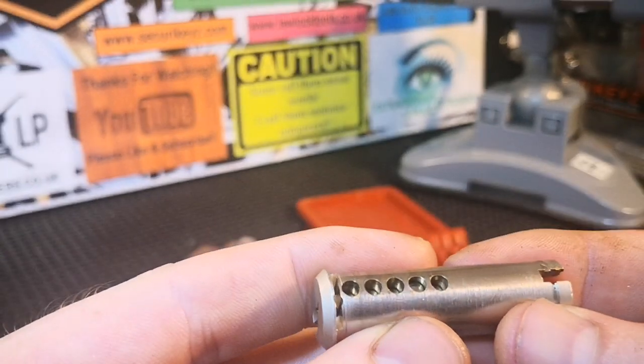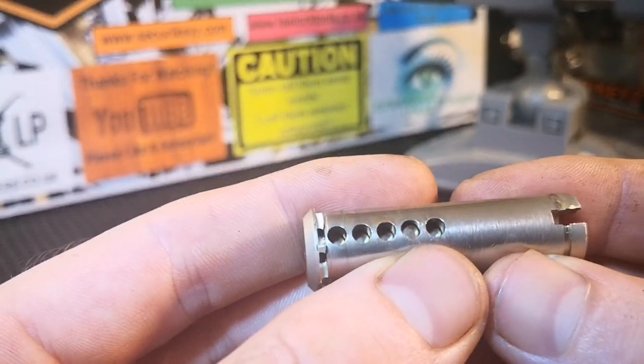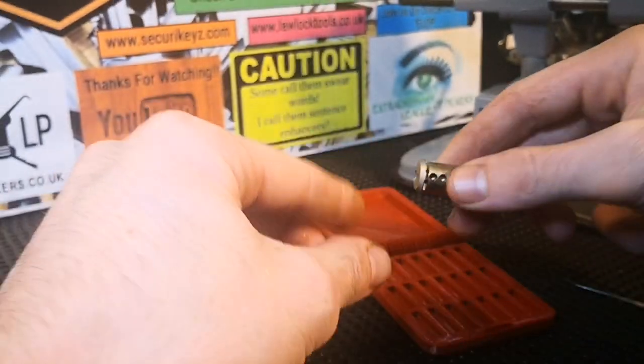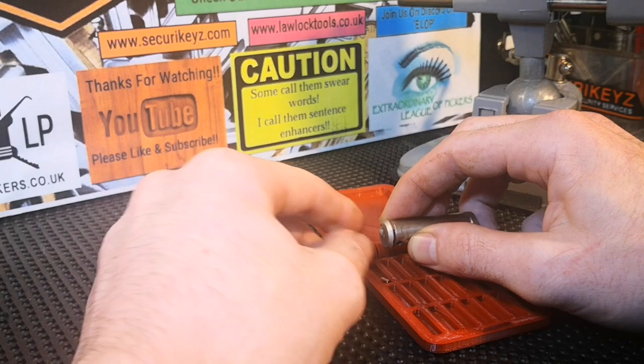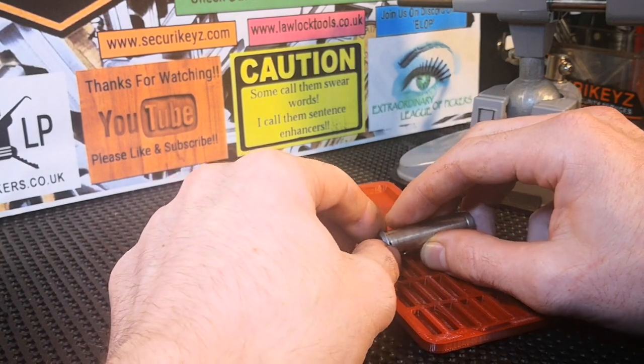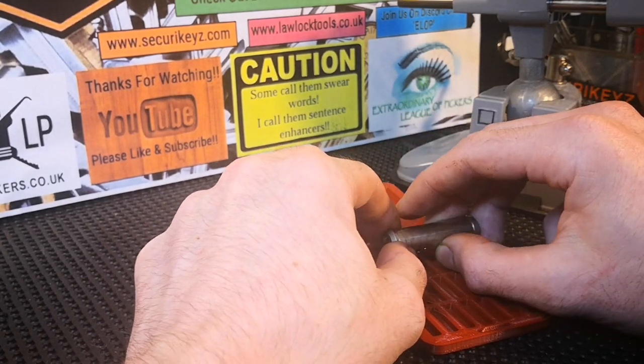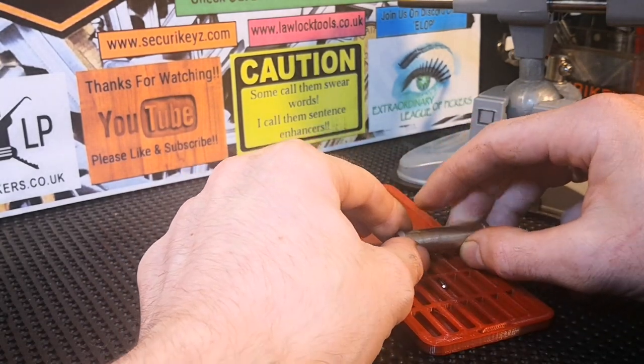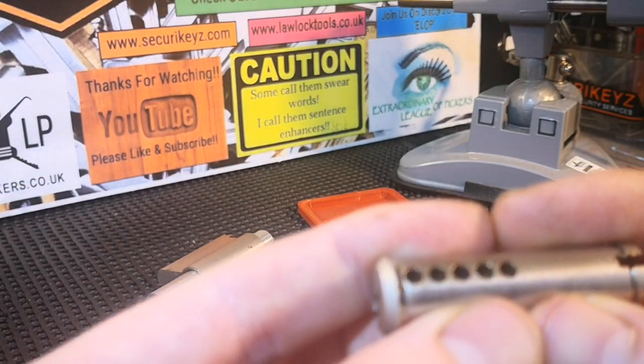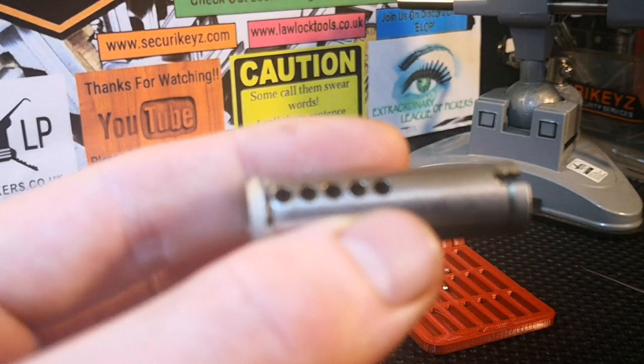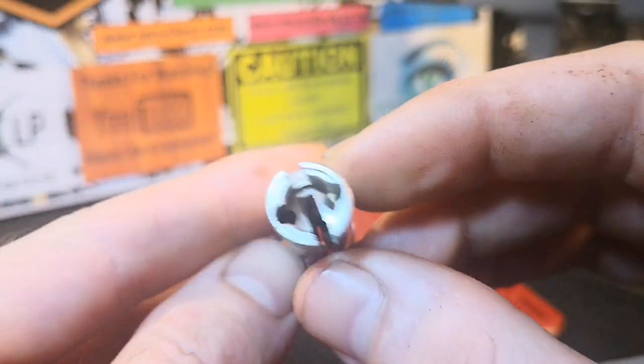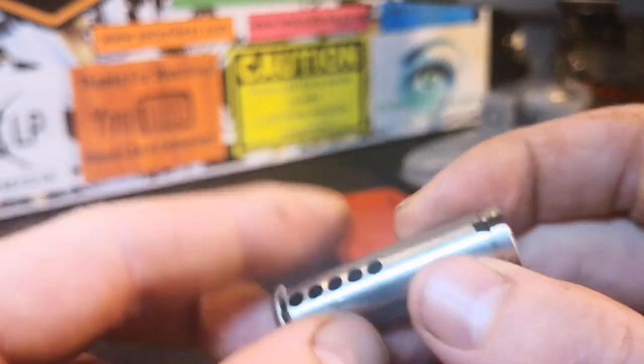As we can see, everything needed to be picked. Number four is quite high set. I thought that was number five but steel pin. Another steel pin. Steel pin. Steel pin. And steel pin. Awesome. So yeah, nice clean core.